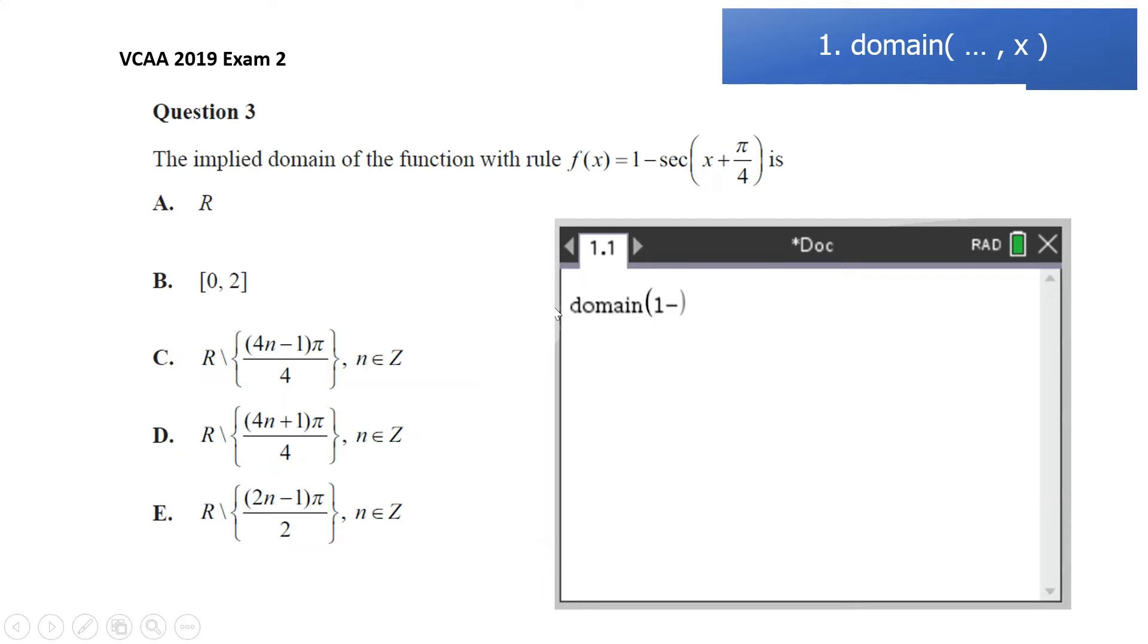You can find it in the catalogue, or you can just type in D-O-M-A-I-N, the function, and then comma the variable. So here it's x. So we do need that comma x. And then there we are.